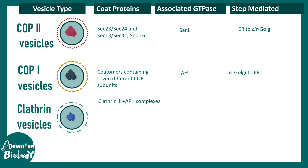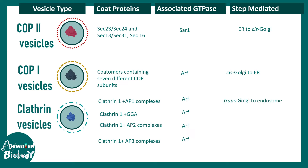Clathrin-mediated transport is more diverse because different complexes bind to clathrin — for example, clathrin and AP1, clathrin and GGA, clathrin and AP2, or clathrin and AP3. Depending on the complex, the transport destination differs. Clathrin/AP1 and clathrin/GGA mediate trans-Golgi-to-endosome transport. Clathrin/AP2 is involved in plasma membrane to endosome transport. Clathrin/AP3 is associated with Golgi-to-lysosome transport. In all cases the associated GTPase is ARF GTPase.